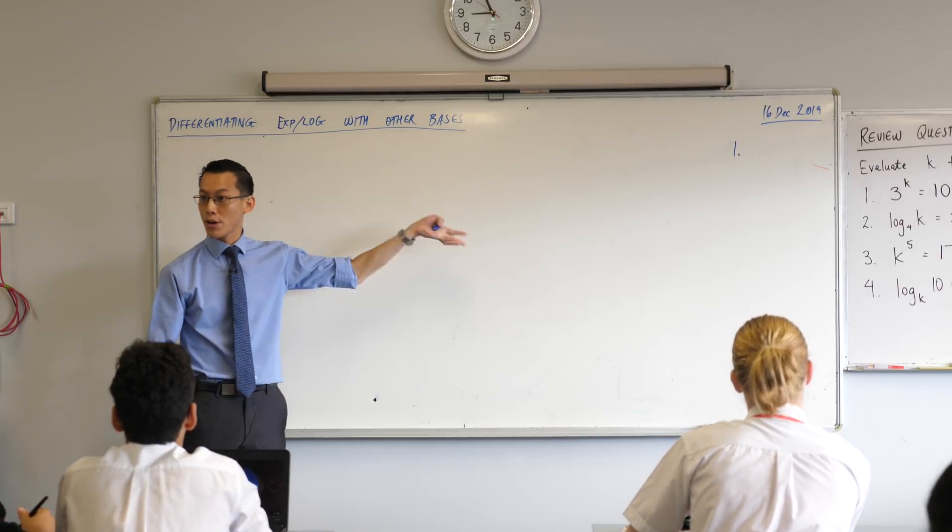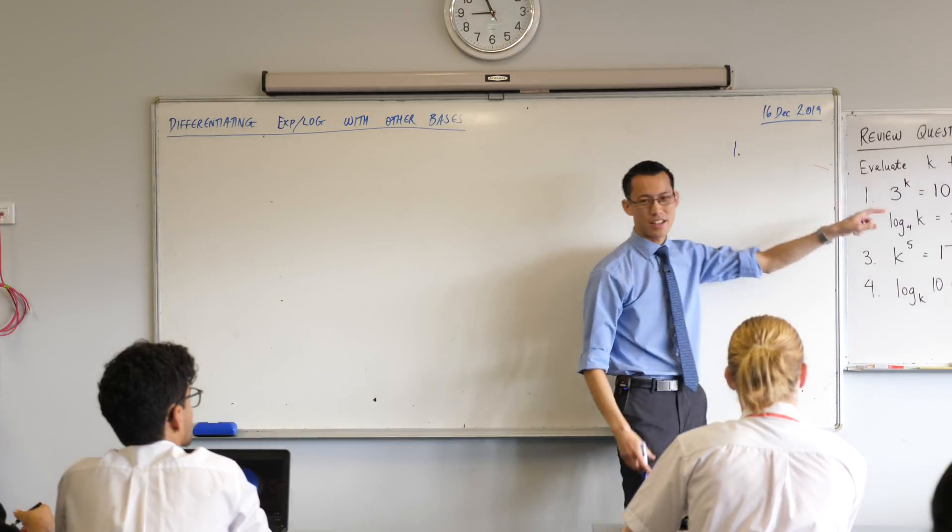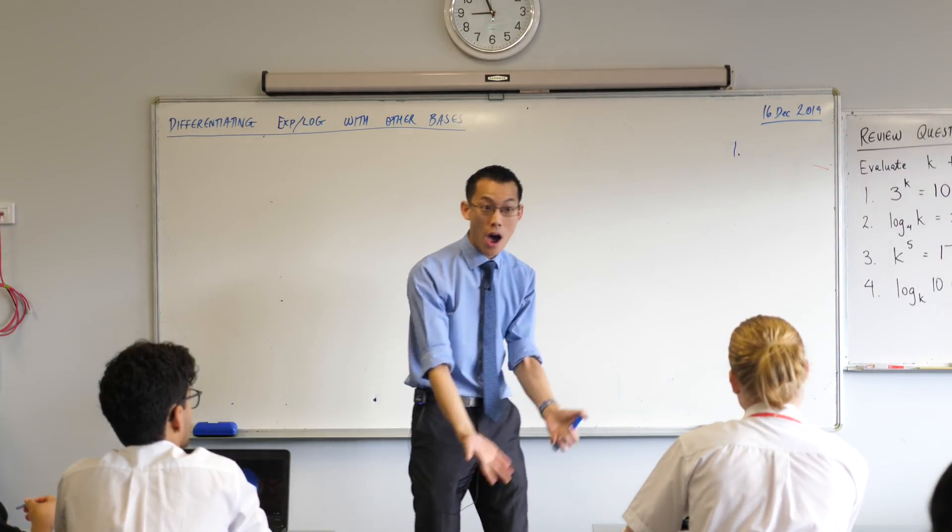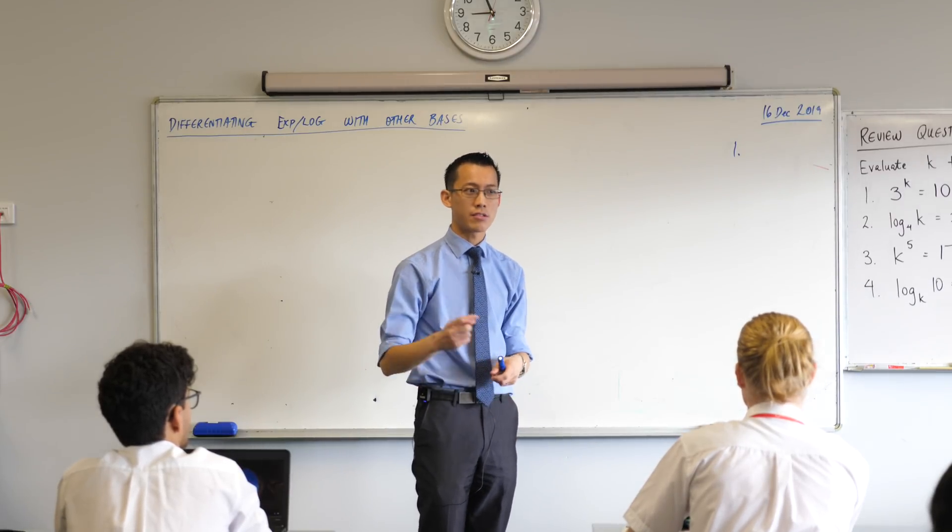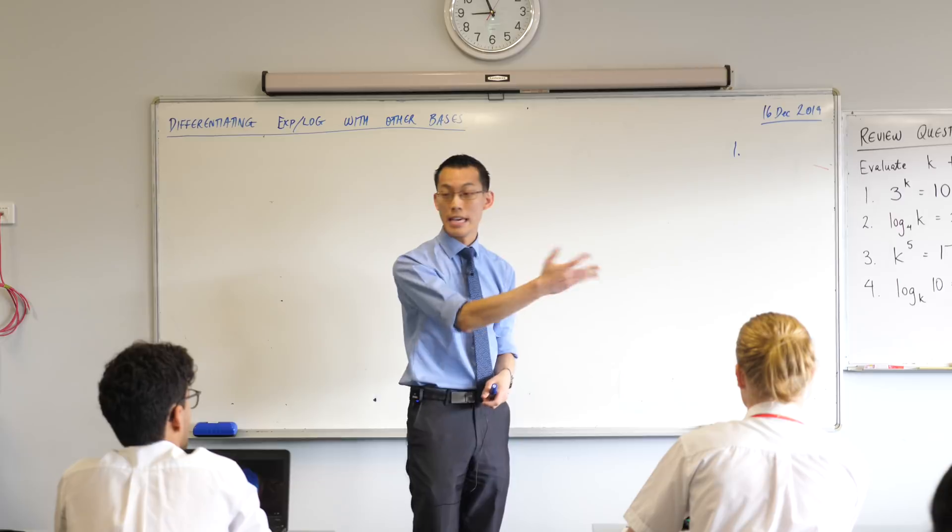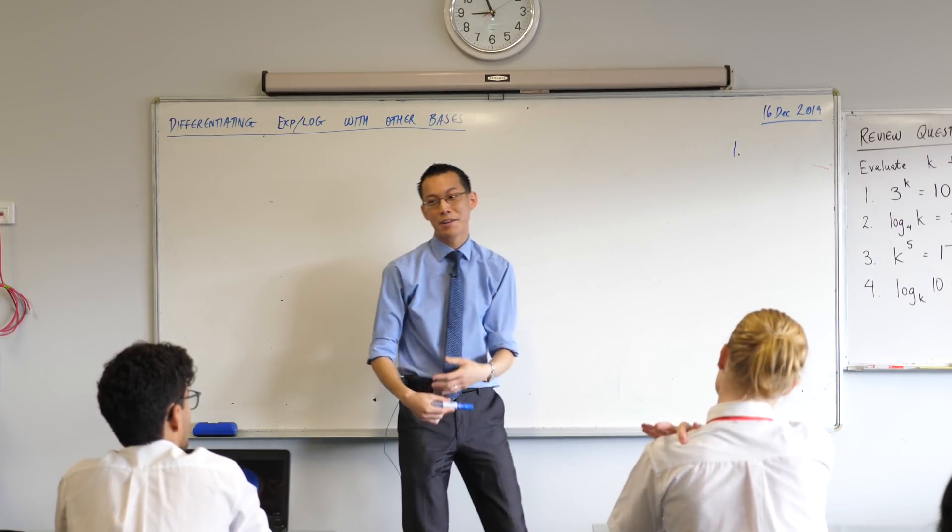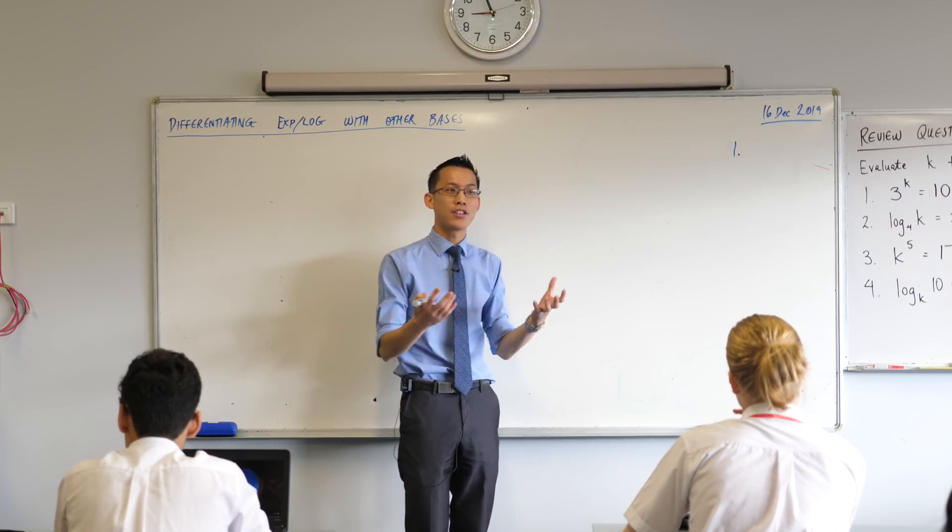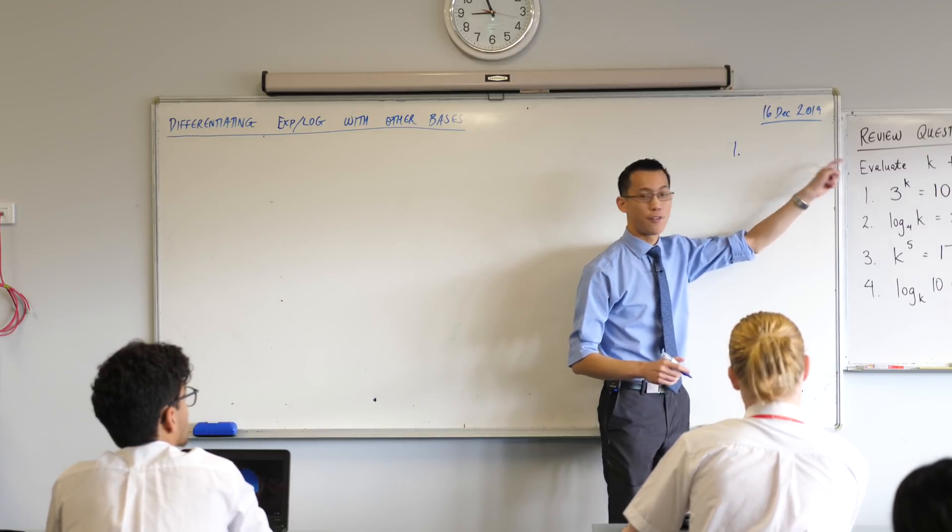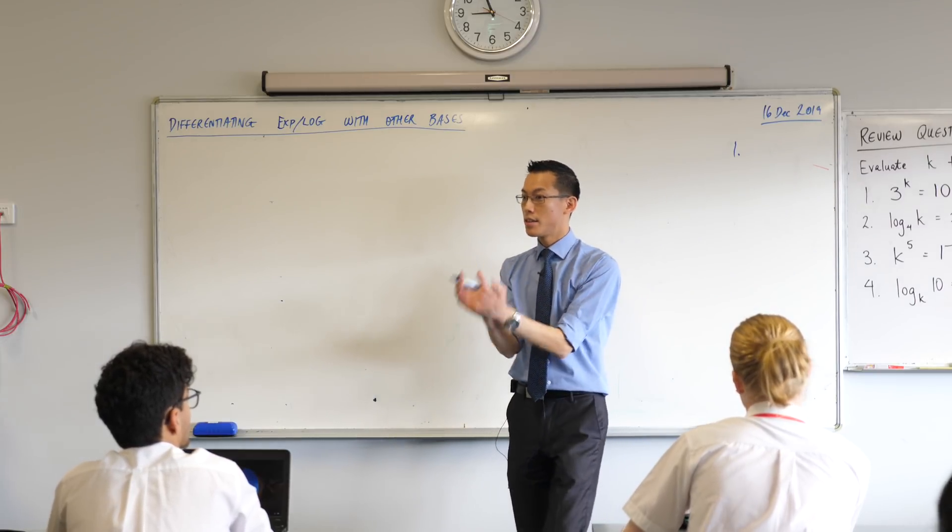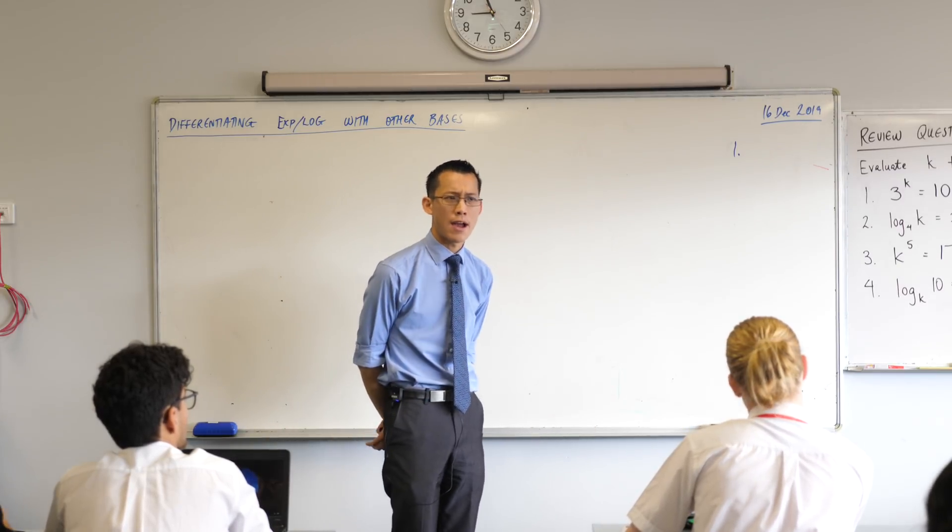When you've got a question like 3 to the power of some unknown number and then it equals a number that's not like a nice neat power, like if the right hand side said 9, 3 to the power of something is 9, you could instantly say that's 3 squared equals 9. Or if it was 27 or 81, if it were a nice number. But I deliberately gave you a gross number because that's where our knowledge of logs and exponentials can actually help. So I can rewrite this first equation in a form that makes k the subject. How do I do that? How do I rewrite it?